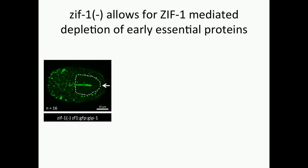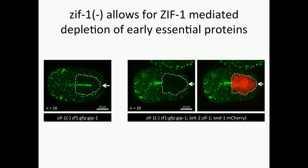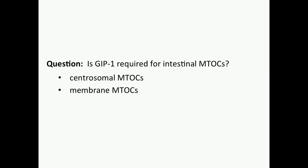As a proof of principle, here you can see localization of our ZF1 GFP-tagged GIP1 with the intestine outlined. Upon introduction of an intestine-specific ZIF-1, we see robust degradation in the intestine alone, and we can put other markers in the intestine as well. For the first time, we can now begin asking for these essential proteins like GIP1 whether they are required for forming the MTOCs — both centrosomal and membrane MTOCs, since the proteins are found at both sites.